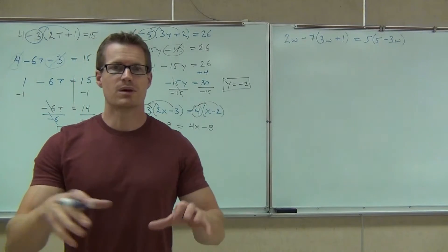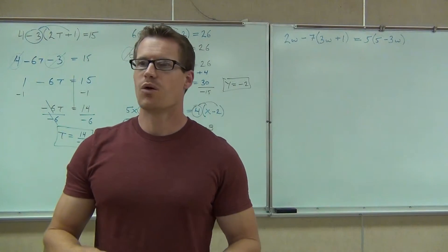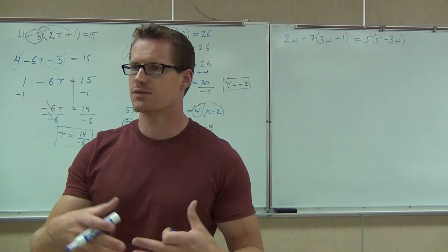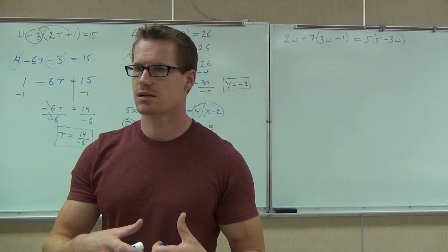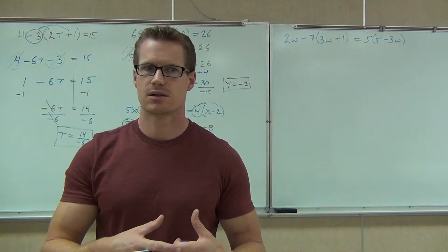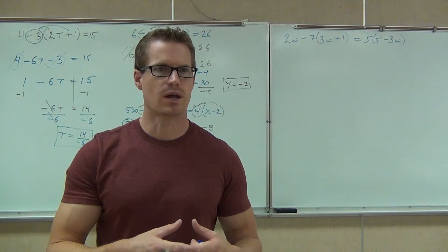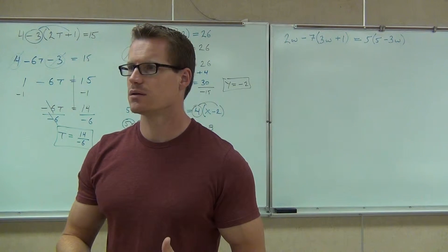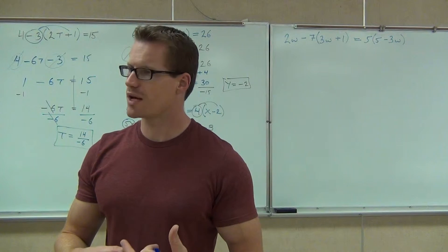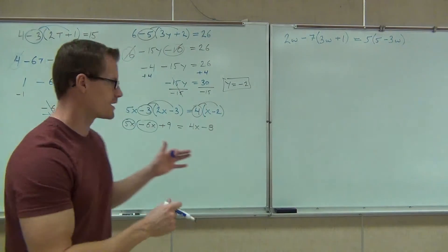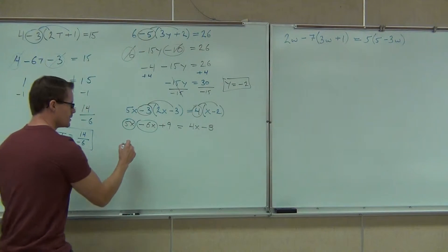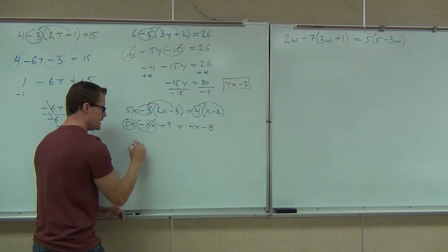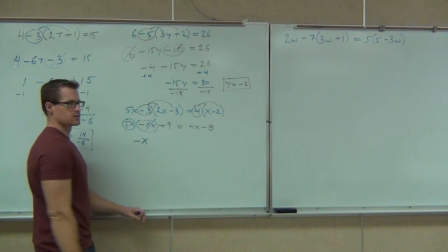You've got to be using the addition rule — it's the only way we combine like terms. What's 5x combined with negative 6x? Negative 1x. 5 minus 6 is negative 1. So we should be getting negative x out of this.